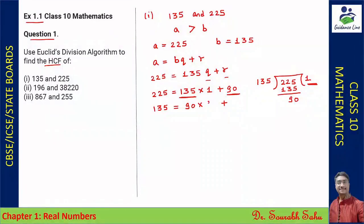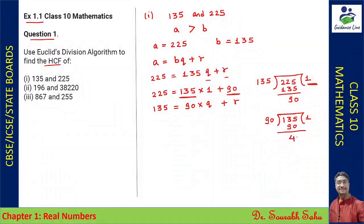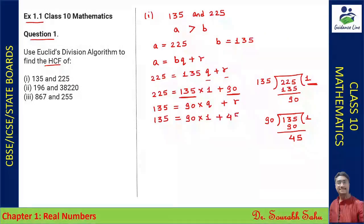Now again I am dividing 135 by 90. We get 90 × 1 = 90, and we are left with remainder 45.